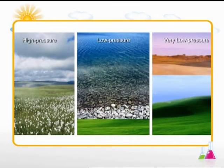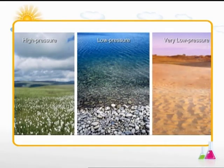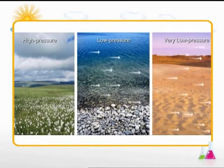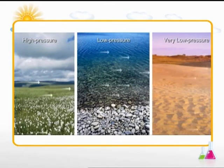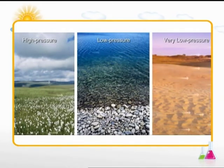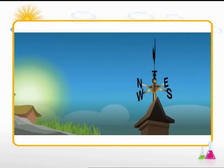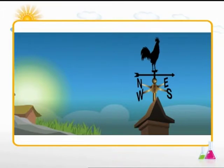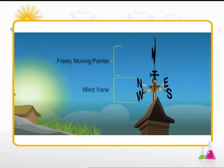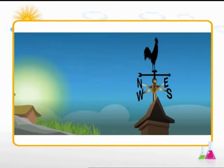Wind velocity or speed depends on the difference in pressure between two points. The wind direction can be shown by a freely moving pointer on a wind vane. If the wind is blowing from the east, the pointer will point to the east.